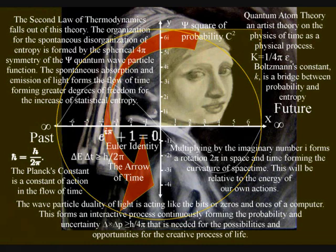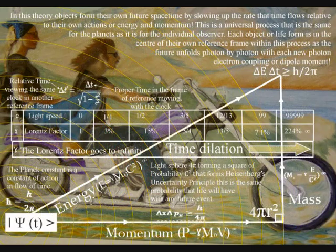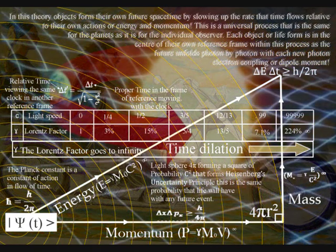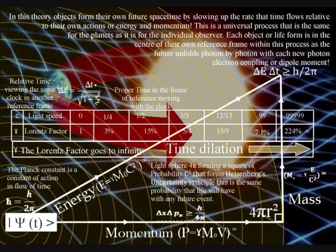Light has momentum, and momentum is frame dependent, so we have a process that forms an infinite number of reference frames that are continuously coming in and out of existence. Each reference frame has its own timeline from the past into the future, with the future unfolding light photon by light photon with each new photon oscillation or vibration.